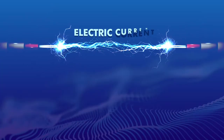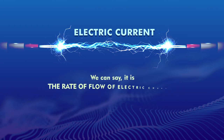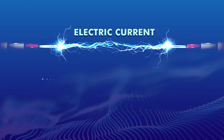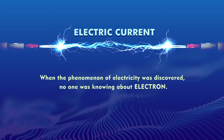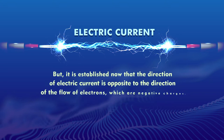When we talk about electric current, we define it as the amount of electric charges flowing through a particular area in a unit time — the rate of flow of electric charges. When electricity was discovered, no one knew about the electron. It was initially assumed that it was due to the flow of positive charges, and the direction of that flow was taken as the direction of electric current. Later, when the electron was discovered, it was established that electric current is opposite to the direction of electron flow.